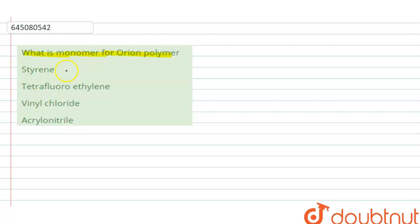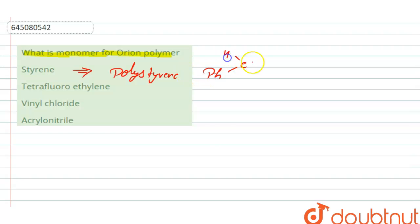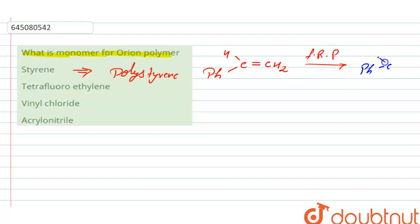We have four options. In option A, we have styrene. Styrene is the monomer of polystyrene. The structure of styrene is: Ph–CH=CH₂. If we undergo free radical polymerization, we get polystyrene, which has the repeating unit –[Ph–CH–CH₂]ₙ–.